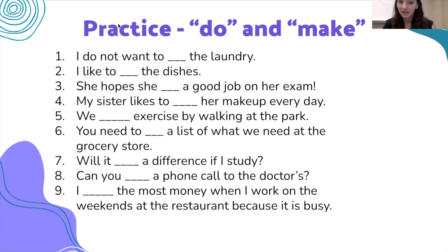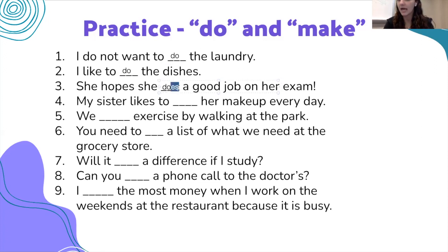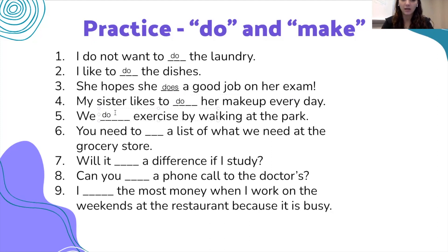For the answers: number one, 'I do not want to do the laundry.' Number two, 'I like to do the dishes.' Number three, 'my sister hopes she does' — in this case it is a little different. We add 'does' because we have 'she.' Whenever we have 'he' or 'she,' the verb becomes 'does.' Number four, 'my sister likes to do her makeup every day.' Number five, 'we do exercise by walking at the park.'